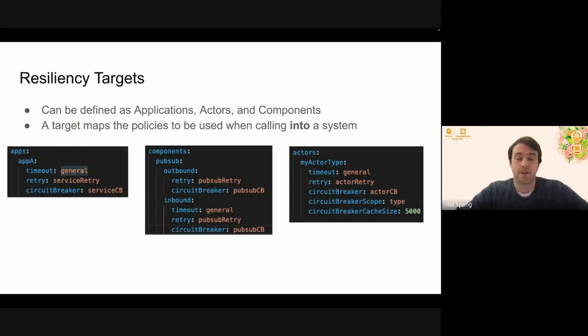And now we also have the targets, which is the other side of the resiliency policy. So these can be applications, actors or components. And then what they do here is they're mapping policies into the system that you're calling. So the entire resiliency configuration is basically setting up a string to value map, where the string is the name of the policy to the actual policy itself. And then in the target, it's the name of the target to what the policy is looking for, what the target is looking for in terms of a retry policy.